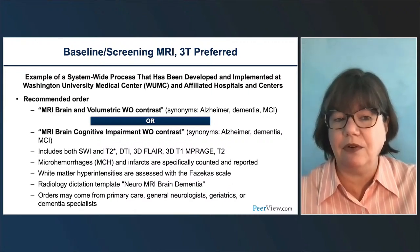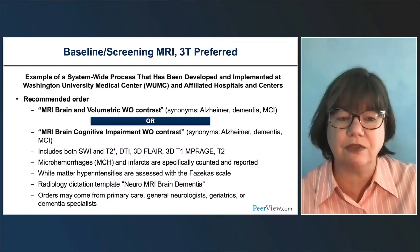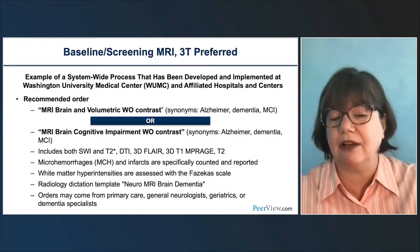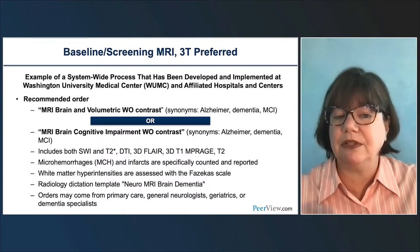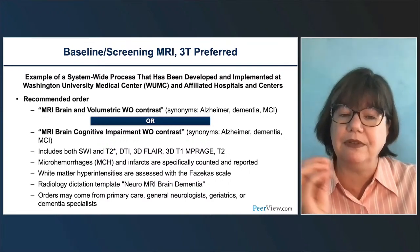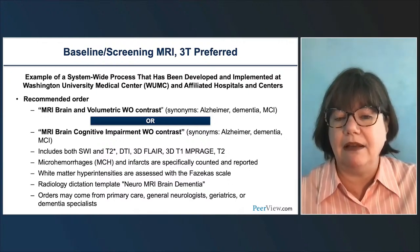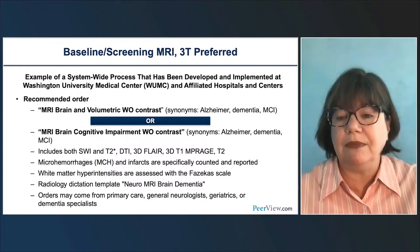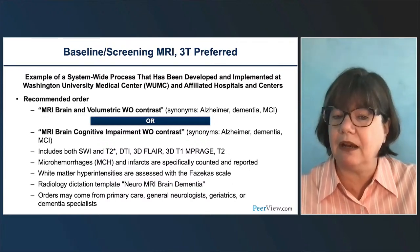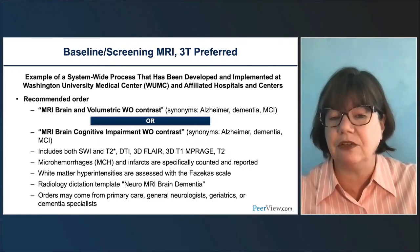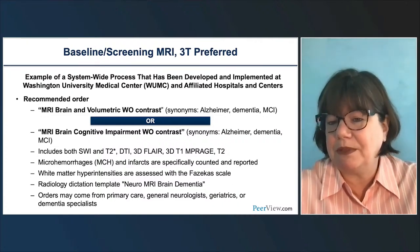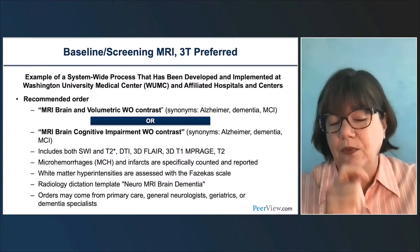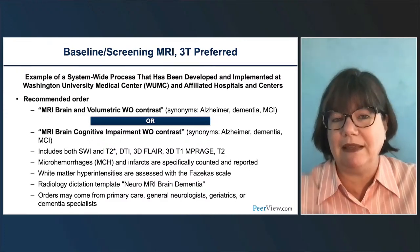Within that specific order, we're counting microhemorrhages, counting lacunar infarcts, and grading white matter hyperintensities — it's helpful for the neurologist to have something concrete like a Fazekas scale. We have a specific dictation template that opens automatically. This order could be coming from our dementia clinic, dementia specialist, primary care, general neurologists, or geriatricians, all now teeing up patients for potential therapy. We try to make it straightforward to order the right protocol so that if they do go on therapy, we don't have to repeat that brain MRI.